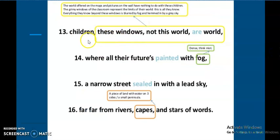'And yet for these children these windows not this world are world.' This is a bit tricky. It has been explained over here. The world offered on maps and pictures on the walls have nothing to do with these children. The grimy windows of the classroom represent the limit of their world. Try to understand, as I just showed you, two worlds. One world is the world of the children, the other world is the actual world out there which they can never get, well at least not till now. This is all they know. Everything they know beyond these windows is blurred by fog and hemmed in by a gray sky.